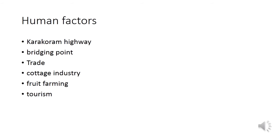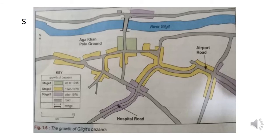Cottage industry of making gemstones and handicrafts is practiced, and fruit farming is done — fruits are sold in the form of dry fruits as well. The local scenic beauty is attracting tourists, making tourism another economic activity. On the map, you can see River Gilgit and a bridge; crossing the bridge towards the north is the Gilgit Bazaar, shown in stages one, two, and three.